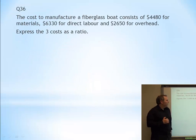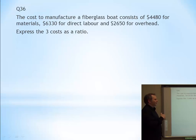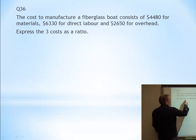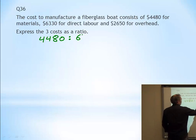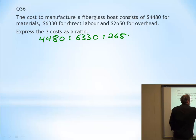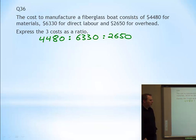So do a question. The cost to manufacture a fiberglass boat consists of $4,480 for materials, $6,330 for labor, and $2,650 for overhead. Express the three costs as a ratio. Well, a really simple solution would be, well, I'll just take a look at the three costs. 4,480, 6,330, 2,650. Here we're looking at the ratio. So we're done.